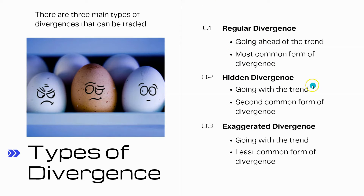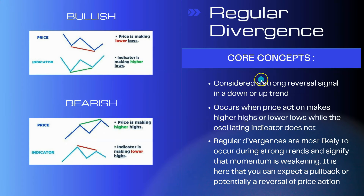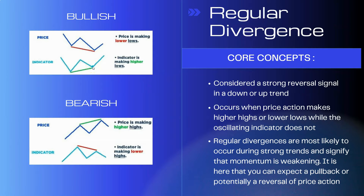Regular divergences are known as classical or original forms of divergence. They are considered a strong reversal signal in an uptrend or downtrend. Regular divergence generally occurs when price action is making higher highs or lower lows but the indicator is not — when the indicator is not in line with price action. These divergences are most likely to occur during strong trends, and they can signify a weakening in momentum, where you might expect to see a pullback or possibly a trend reversal.